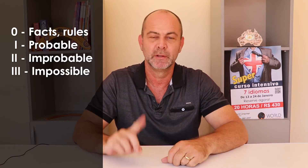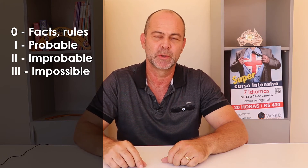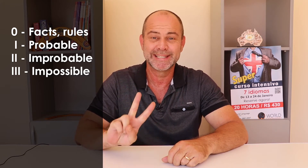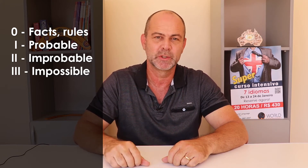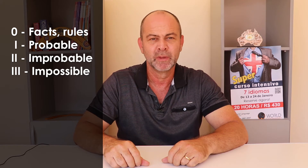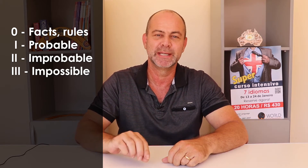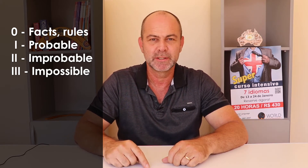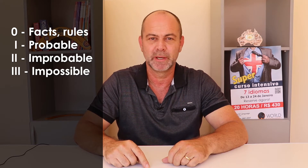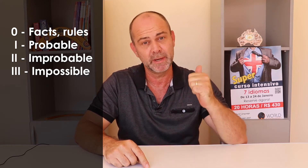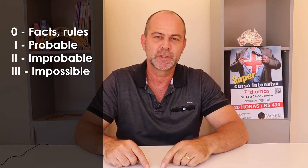The zero conditional talks about facts, rules, and frequencies. The first conditional talks about probable futures. The second conditional talks about improbable futures, and the third conditional I quite often refer to as the impossible conditional, because it doesn't talk about futures — it talks about the past.